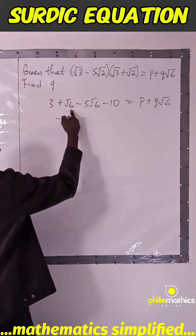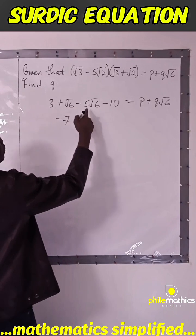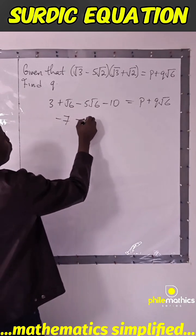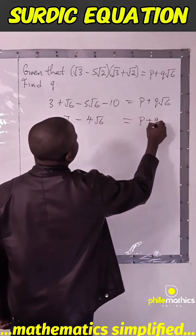And √6 minus 5√6 is minus 4√6, which equals p plus q√6.